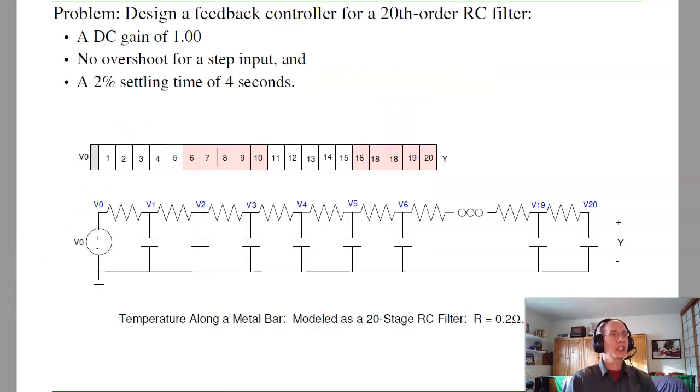To start out, the problem I like to look at is how do you design a feedback controller for a 20th order RC filter. It's also the model of the temperature along a soldering iron, or doing finite element modeling, modeling it as 20 different states. The requirements I have: I want the DC gain to be 1, I want no overshoot for a step input, and I want the 2% settling time to be 4 seconds.